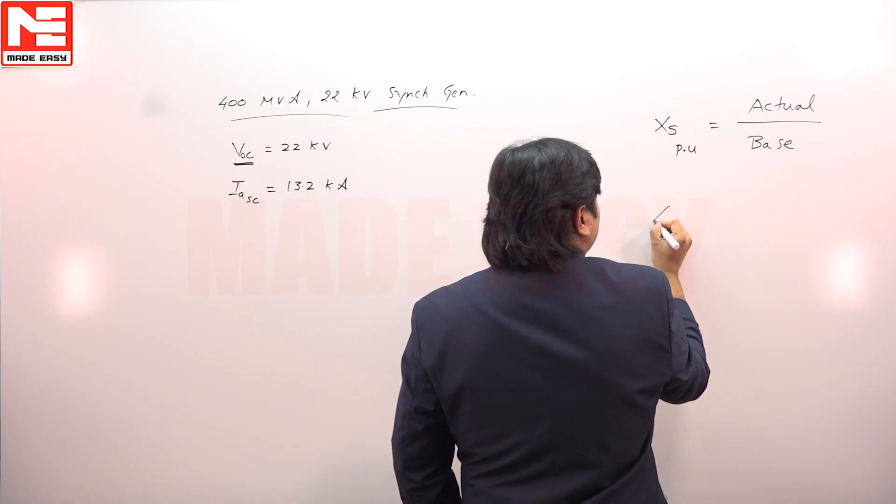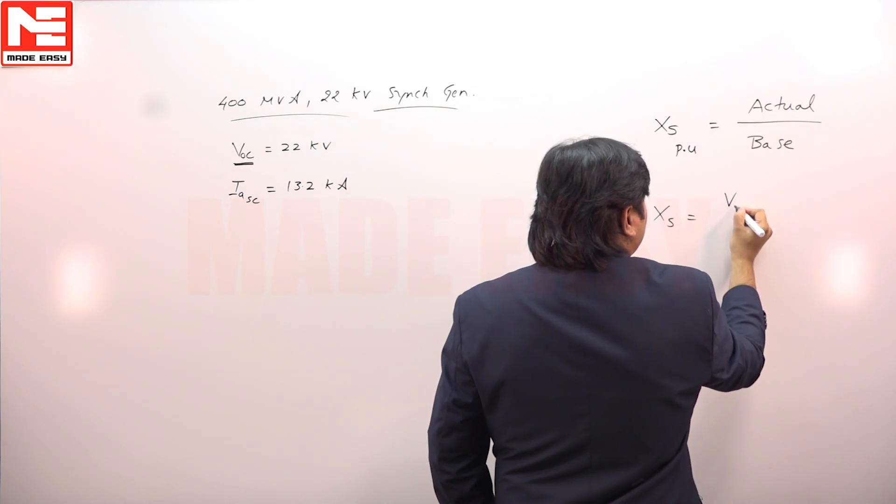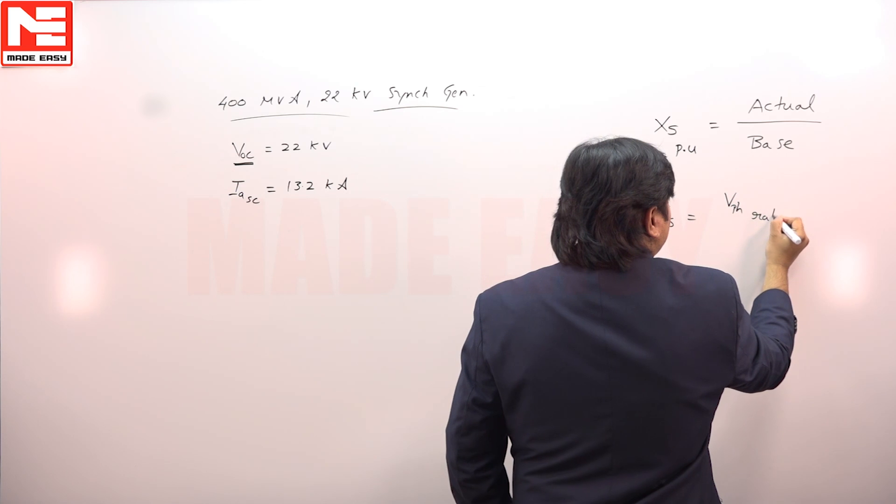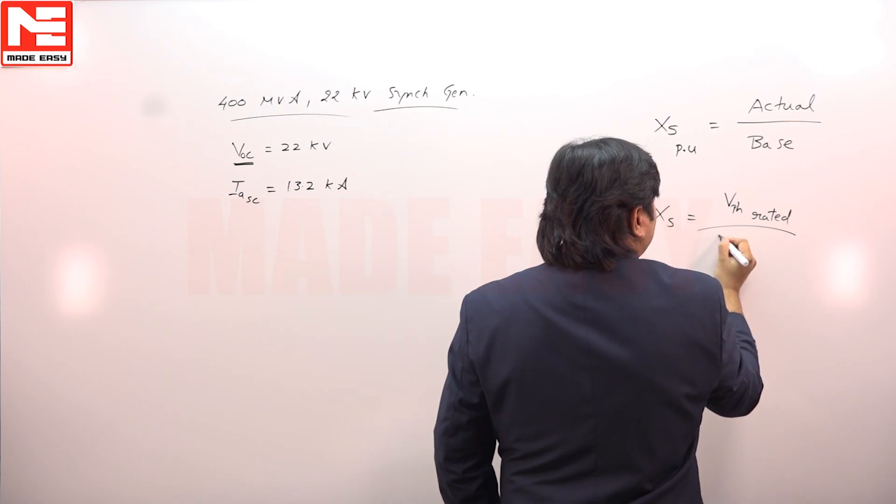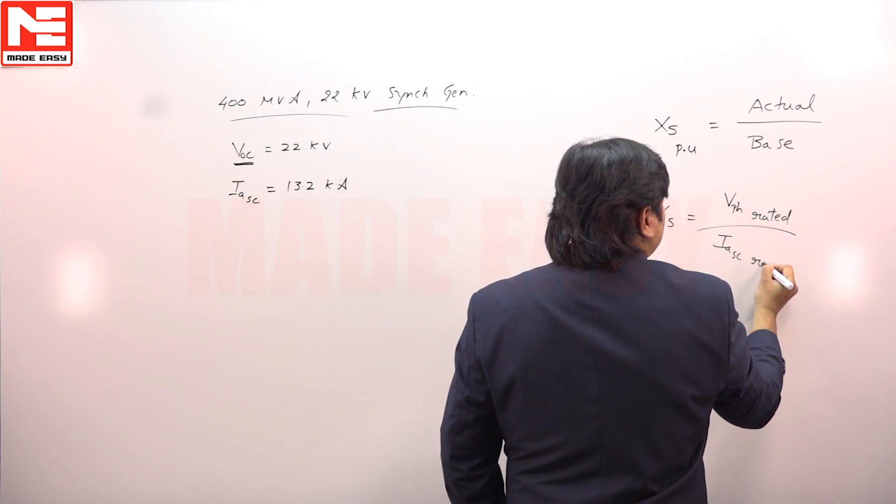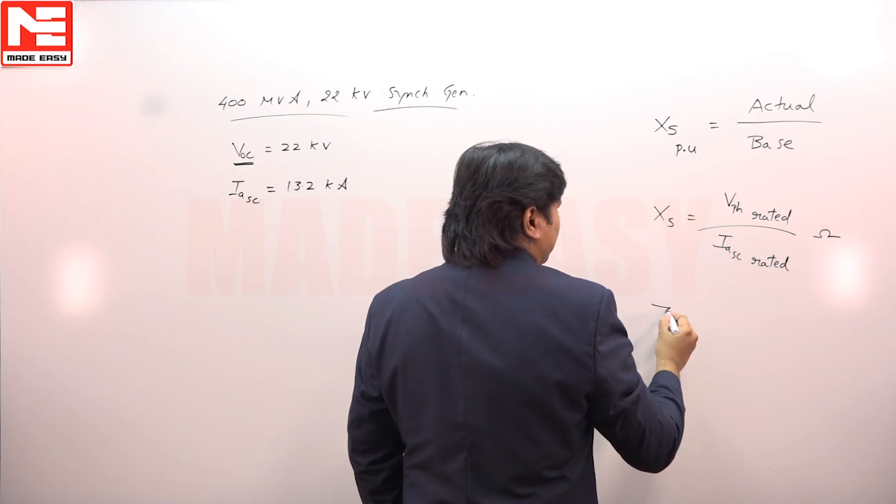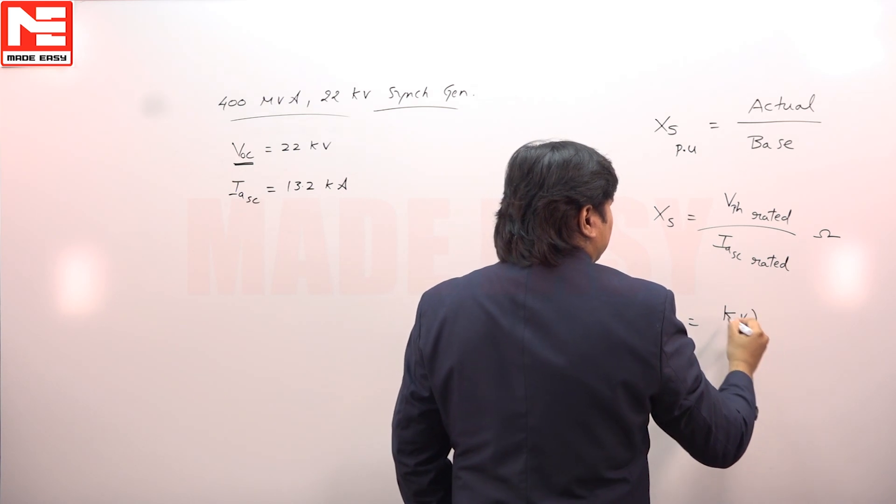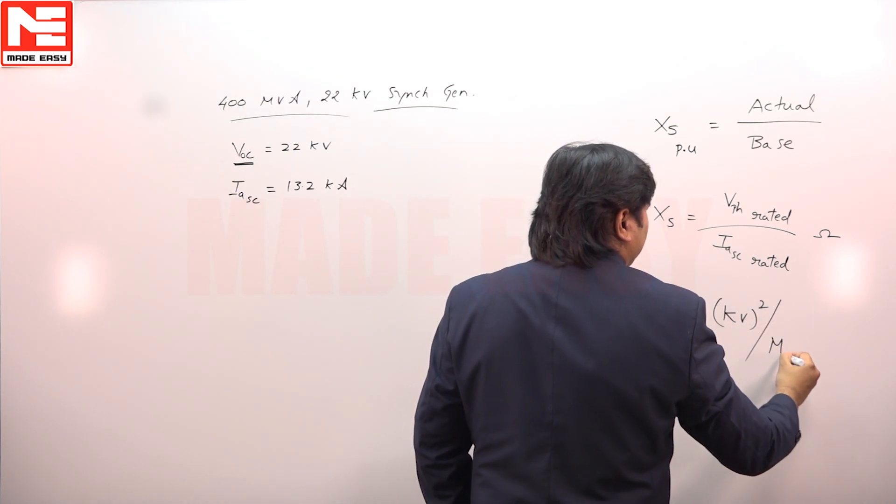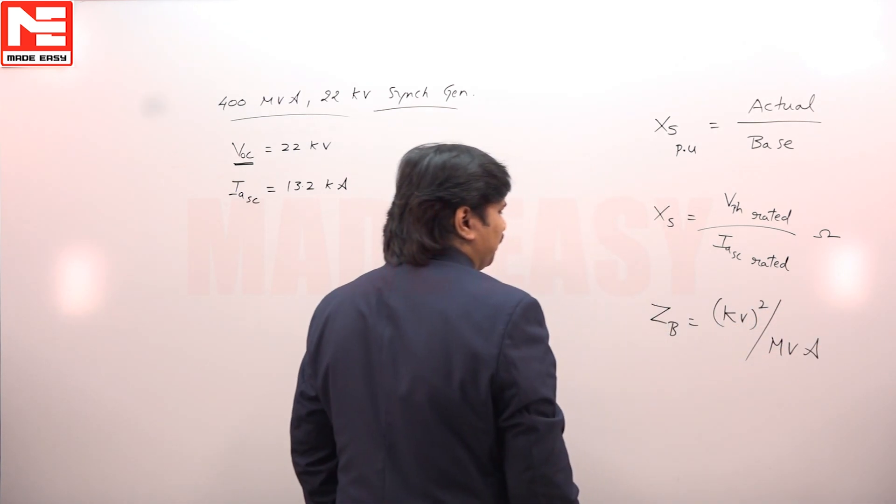Actual value means excess actual value is V phase rated by I SC rated. Base value is according to ratings: kV square by MVA.